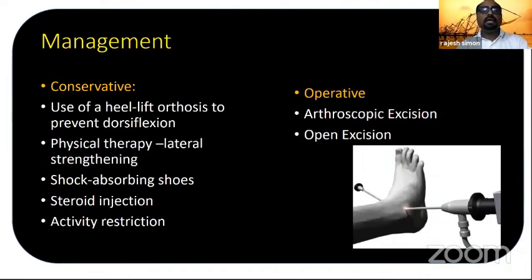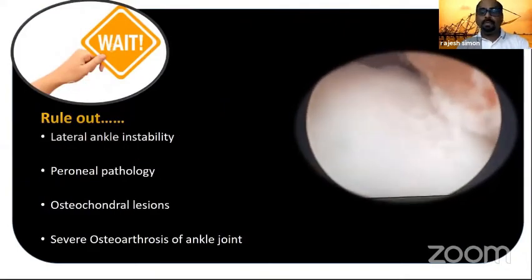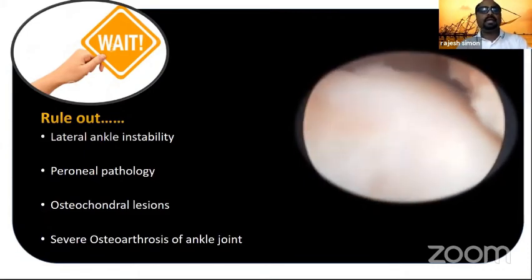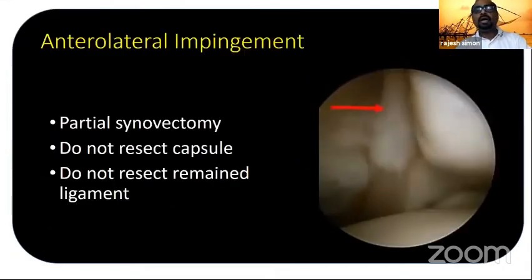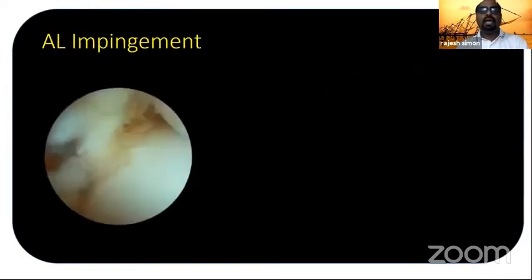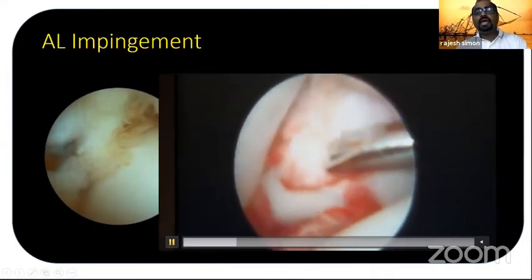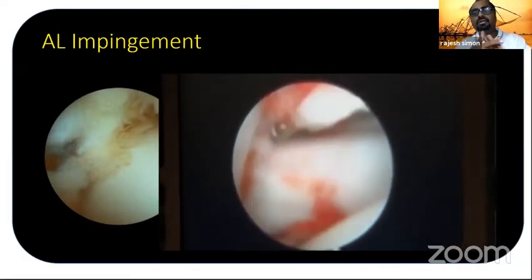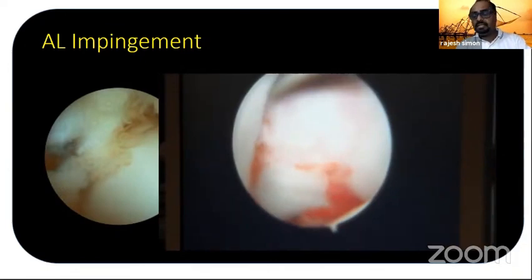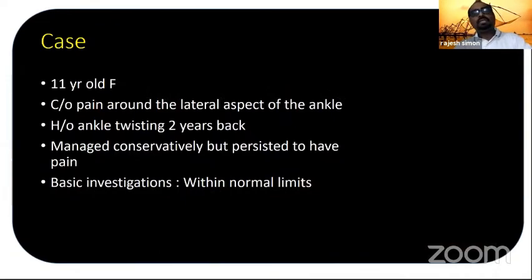Conservative management is an option, but let's talk arthroscopy. In my ankle scope, you can see the amount of impingement. Always rule out instability and other causes first. Do a partial synovectomy but do not resect the capsule. On the anterolateral side you can see the fibula, lateral tibia, and pannus-type synovium. Once you remove that synovium in the anterolateral area, the patient gets immediate pain relief and easy dorsiflexion — as in this dancer case with remarkable relief.